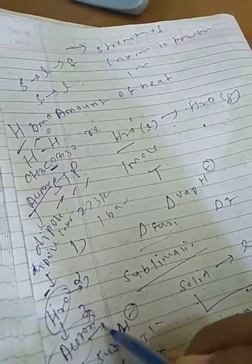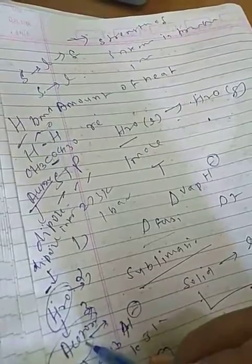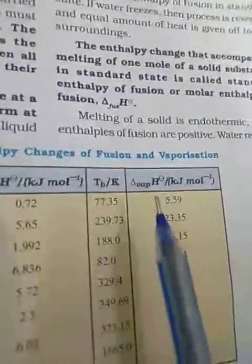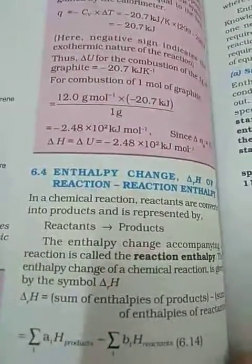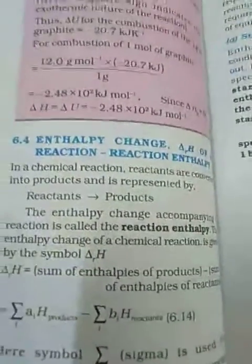Table 6.1 gives values of standard enthalpy changes of fusion and vaporization for some substances. I think as I am teaching you, you are making your notes. Please be regular with me.